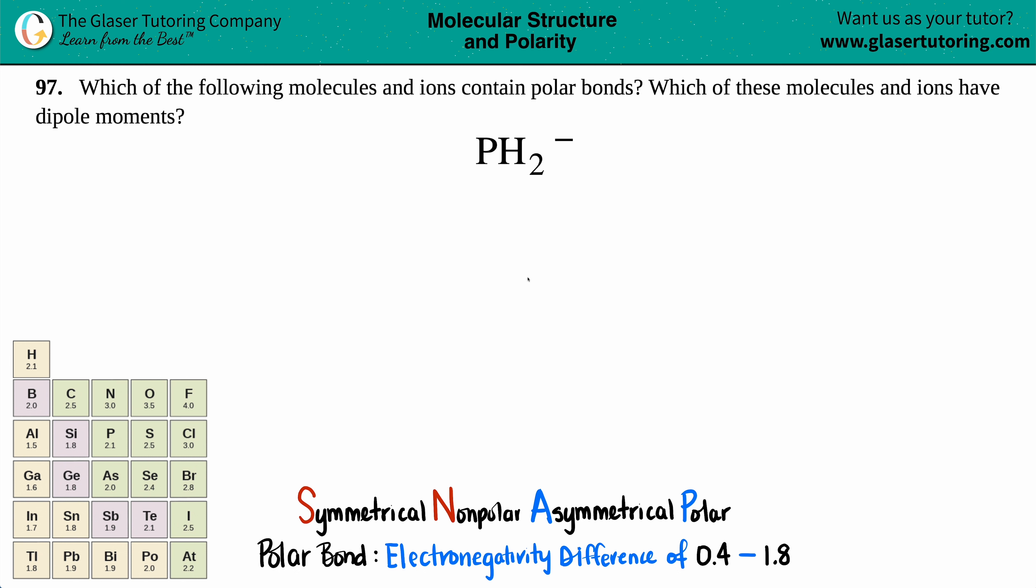Number 97. Which of the following molecules and ions contain polar bonds and which of these molecules and ions have a dipole moment? And then we have PH2 negative.